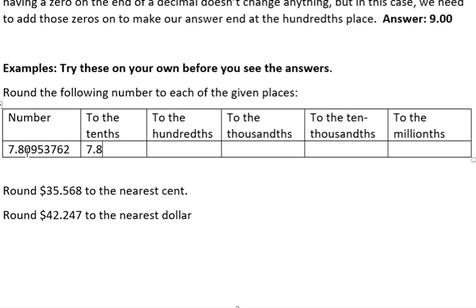To the hundredths: the hundredths is the zero. Look one to the right, that's a nine, so we would round that up and get 7.81. We would not have any trailing zeros because we want to end exactly at the place where we're rounding.